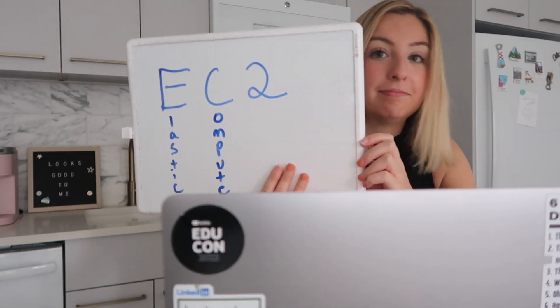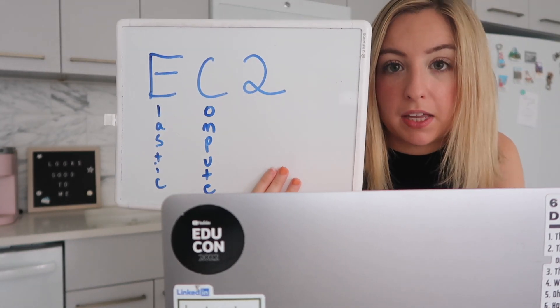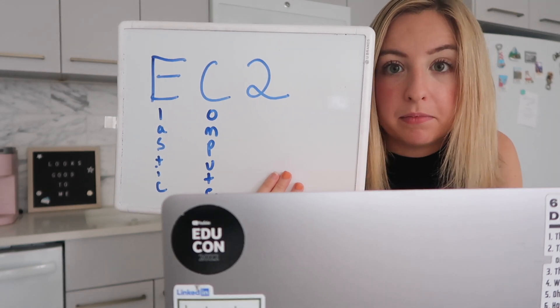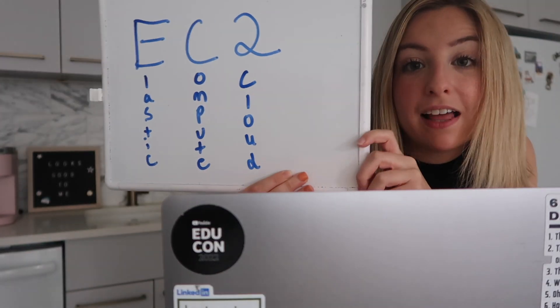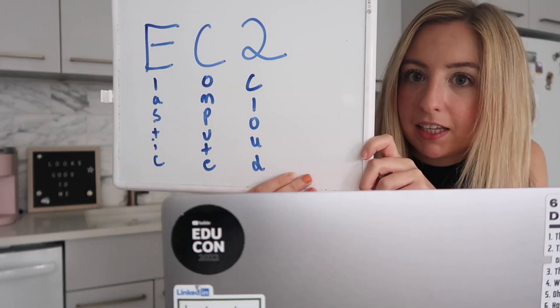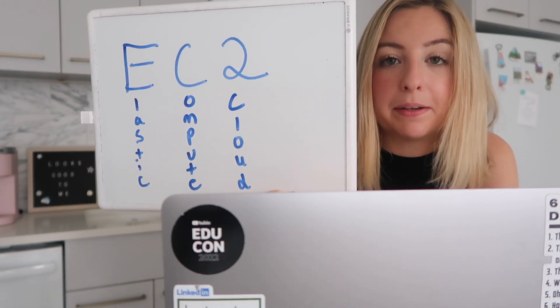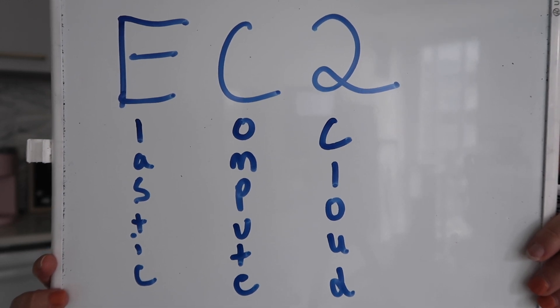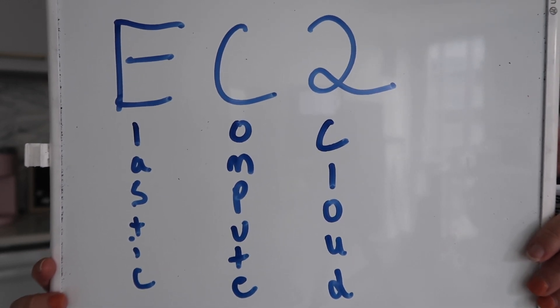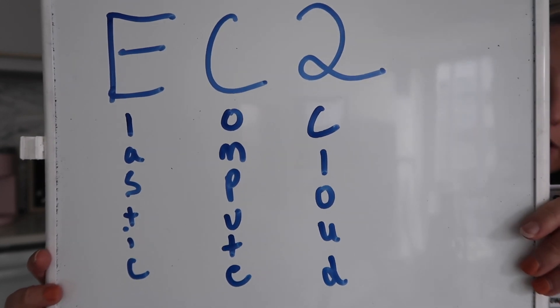Then you have the first C: Compute. An EC2 is the machine that can compute things — it's a computer. Then you have the last C: Cloud. It's a machine that lives in the cloud, specifically the Amazon cloud, because Amazon owns the computer. All together, an EC2 is a computer that lives in the cloud where you can configure its specs and how many you need at a given time to run your code.